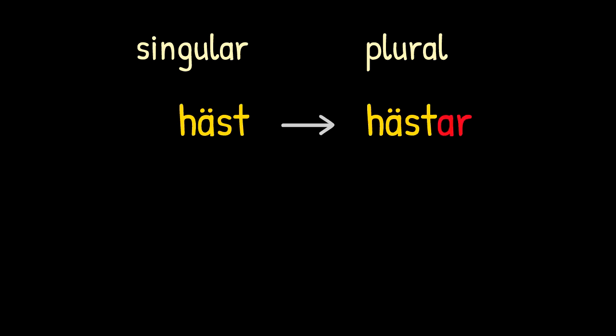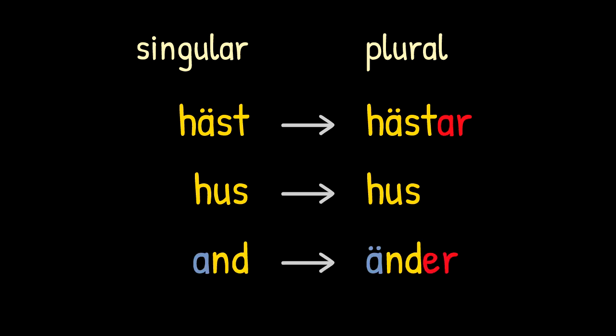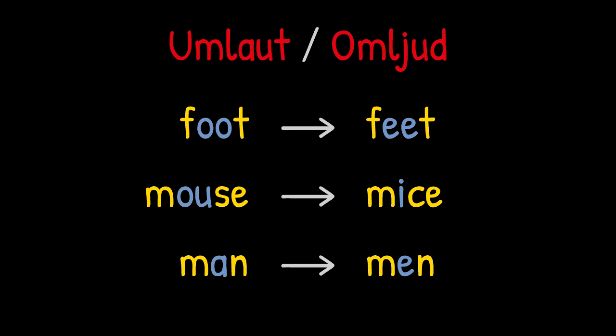In Swedish, the normal way to change a noun from singular to plural is to either add an ending, as in hästar, or to add nothing at all, as in hus. But there is a small group of nouns where this isn't enough and where the main vowel of the noun changes as well, as in änder. This process is called umlaut or omljud in Swedish, and is basically the exact same thing as is found in English words like feet, mice and men.